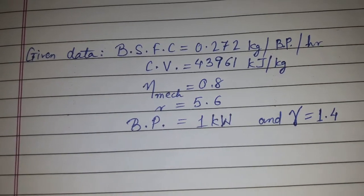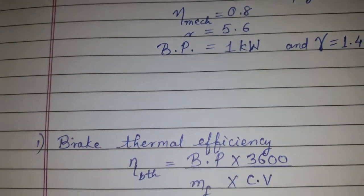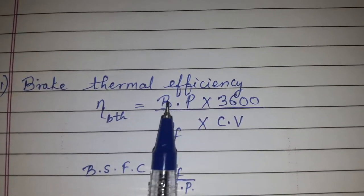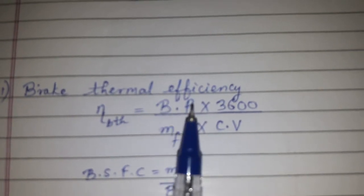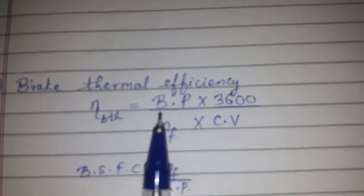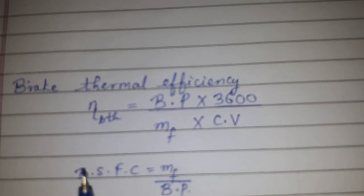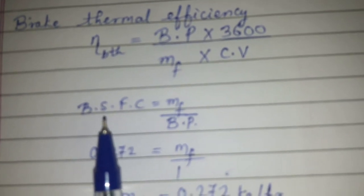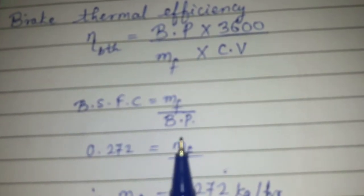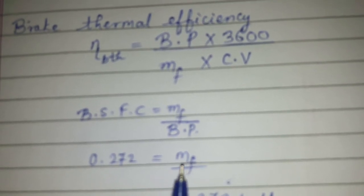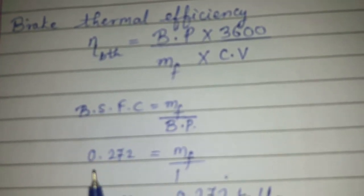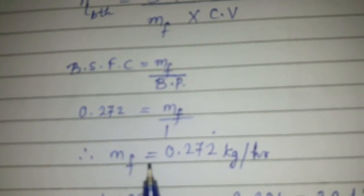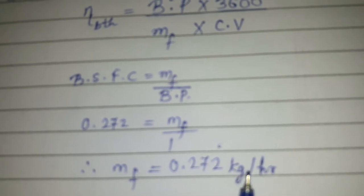Gamma, that is the adiabatic index, is given as 1.4. The brake thermal efficiency formula is: brake thermal efficiency equals BP multiplied by 3600, divided by MF multiplied by CV. Since BSFC is known and BSFC equals MF upon BP, we substitute BSFC and BP equals 1, giving MF equal to 0.272 kg per hour.